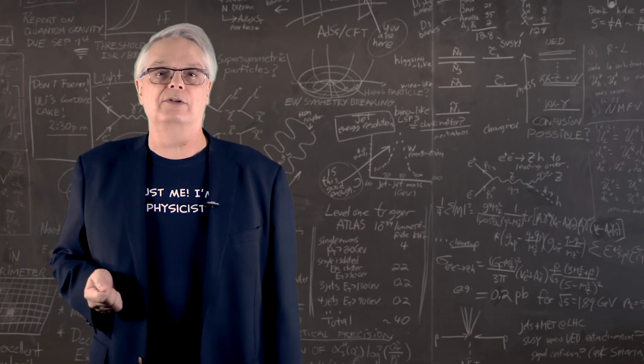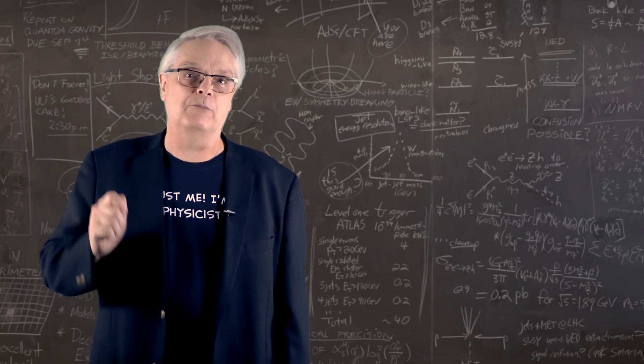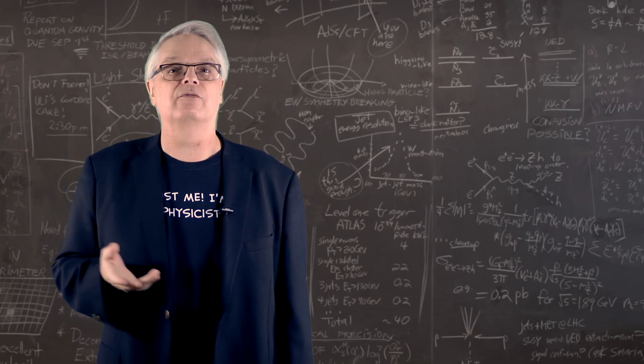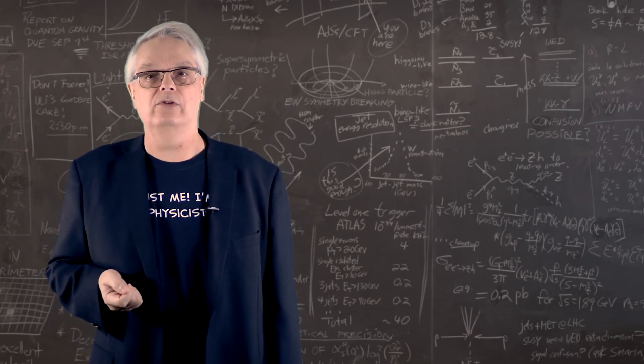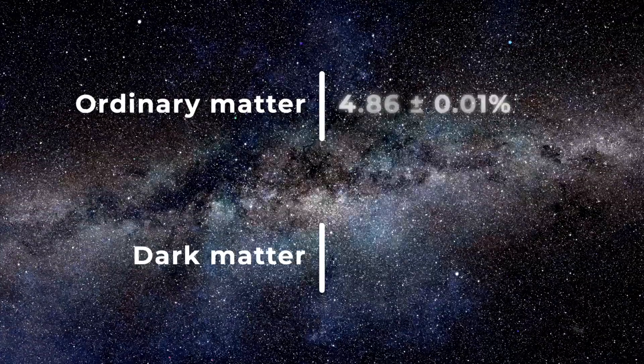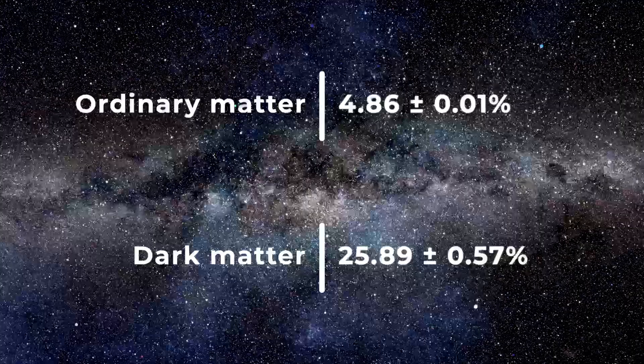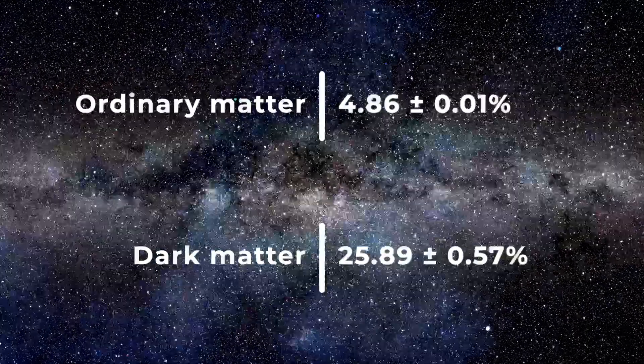Since varying those parameters changes the prediction, we can compare the prediction and measurement and get a precise determination of the amount of both the ordinary and dark matter in the universe. Ordinary matter is 4.9% and dark matter is 25.9%. Vary those fractions just a tiny bit and data and prediction don't agree. Just amazing.